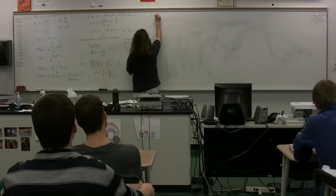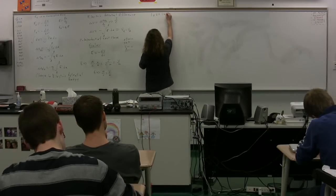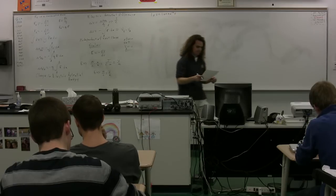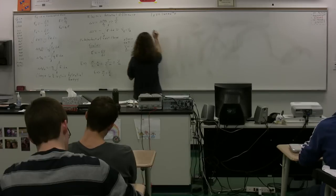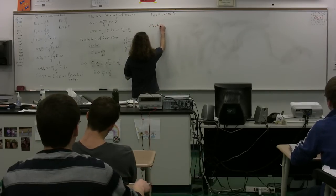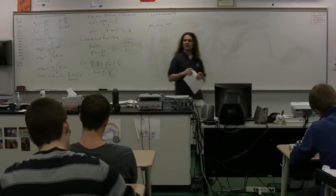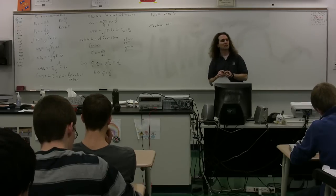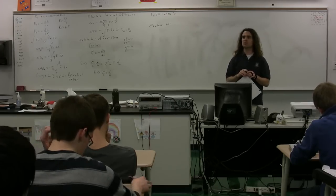One electron volt is defined as 1.60 times 10 to the negative 19 joules. The electron volt. One electron volt. Please tell me why the electron volt, the term electron volt, is actually a misnomer. It leads you to believe it is something which it is not. A misnomer. Nick.